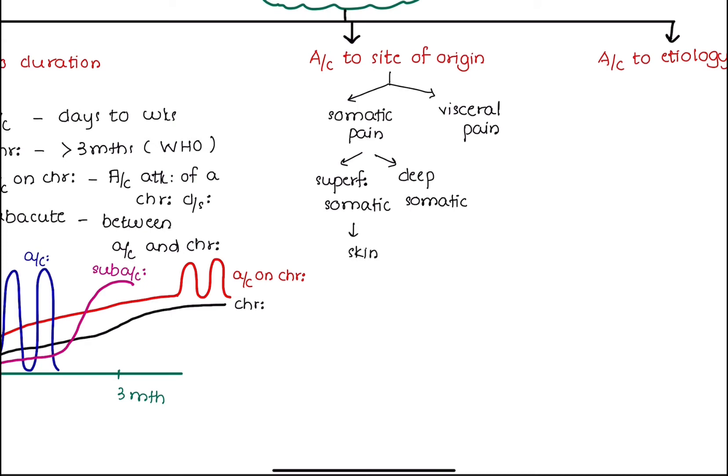Superficial somatic pain comes from the skin, and deep somatic pain is initiated at the bone, muscles, ligaments, and tendons. Visceral pain arises from the internal organs.